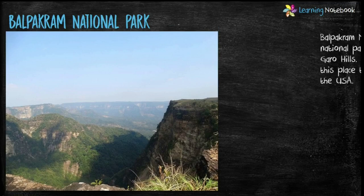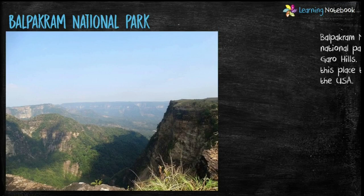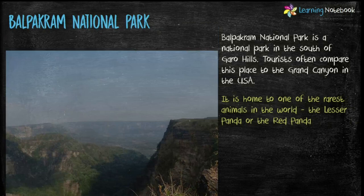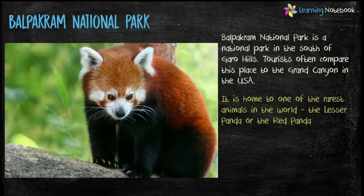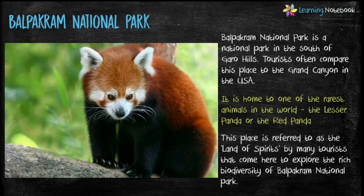Balpakram National Park is a national park in the south of Garo Hills. Tourists often compare this place to the Grand Canyon in the USA. This park is home to one of the rarest animals in the world — the lesser panda, also known as the red panda.